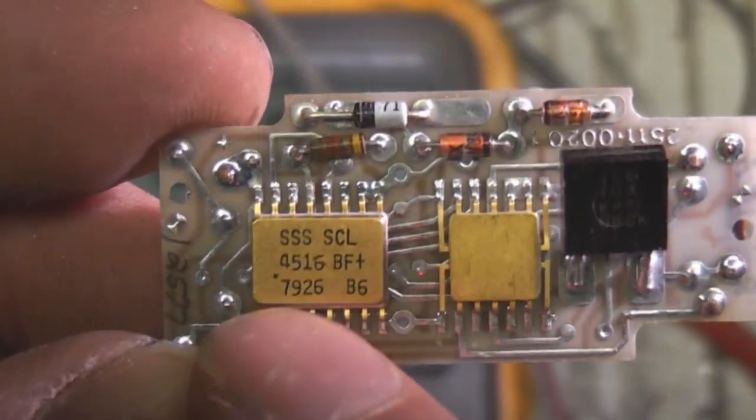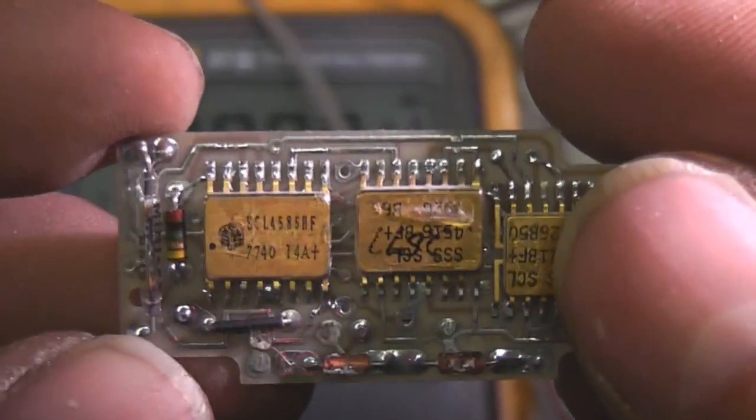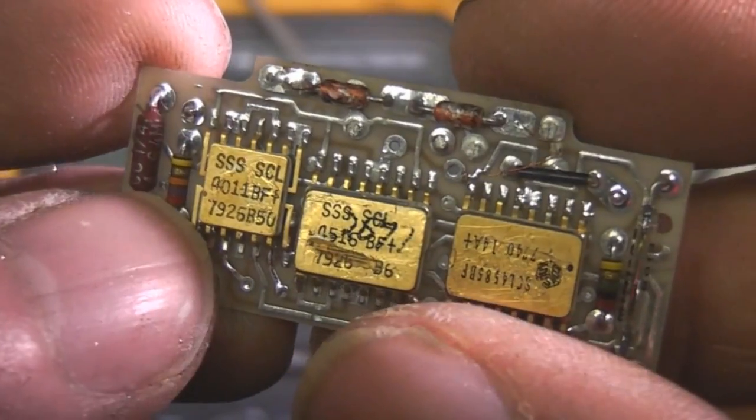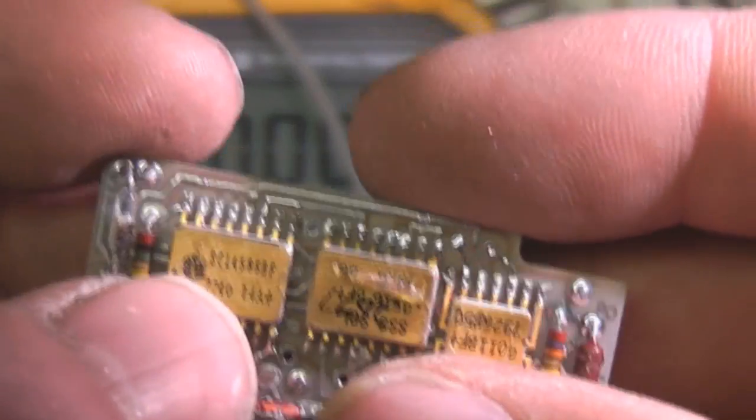These look like date codes here: '79 and '79 on that one, and '77 here.